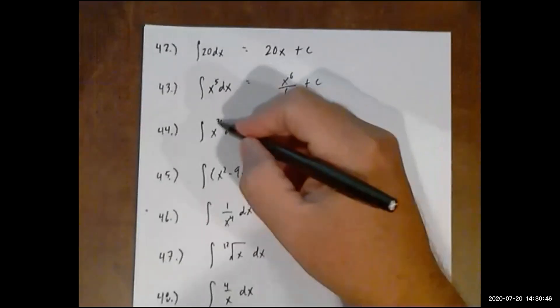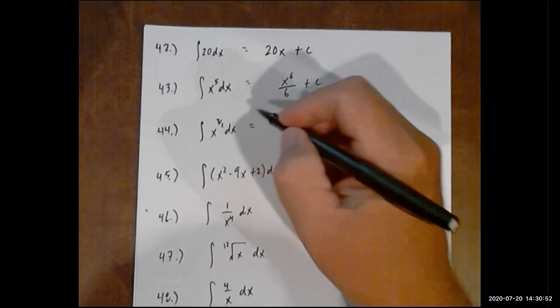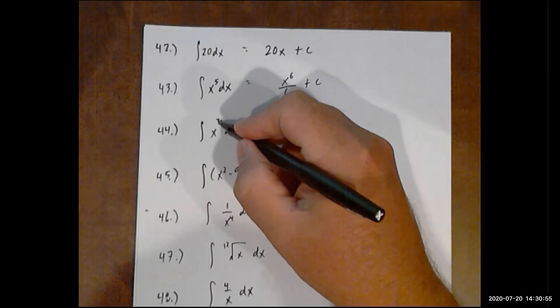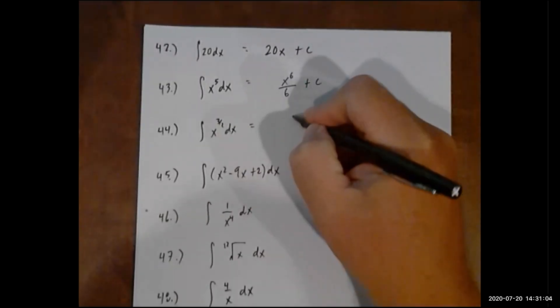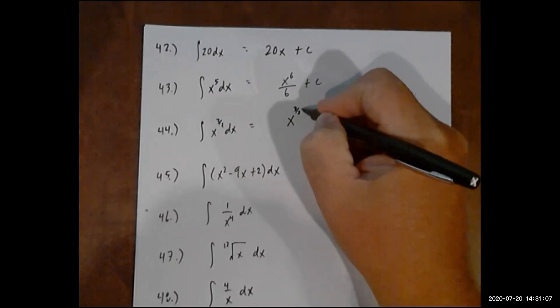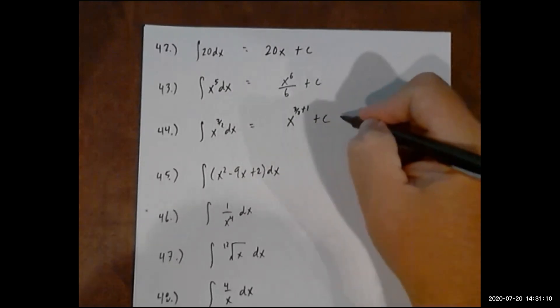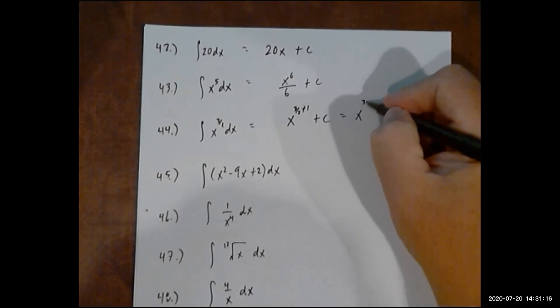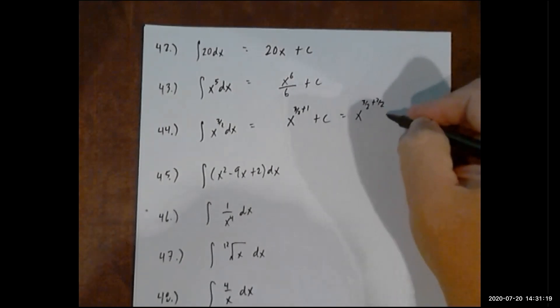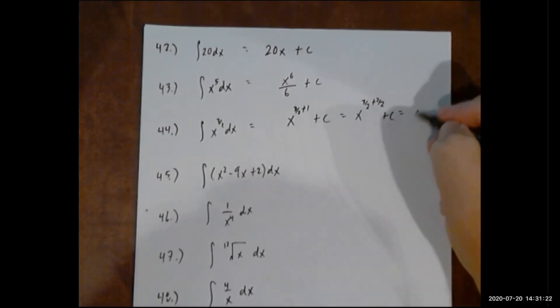44 looks more complicated just because the original exponent is like a fraction, but the rule still applies. You're going to add 1 to this exponent. So 3 over 2 plus 1, you can think of 1 as 2 over 2. Of course, when you add a fraction number, you got to change both these to fractions. Therefore, you finally end up with x to the 5 halves plus c.